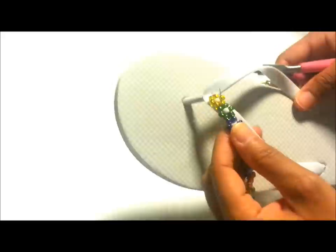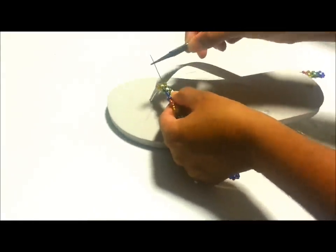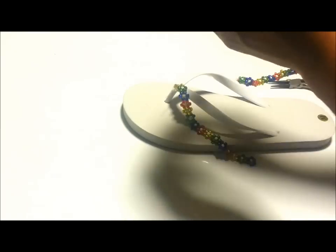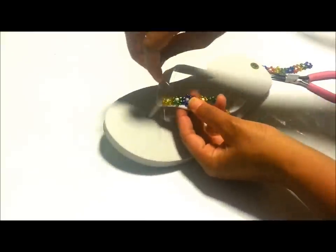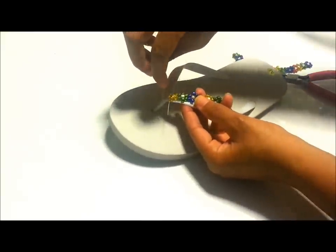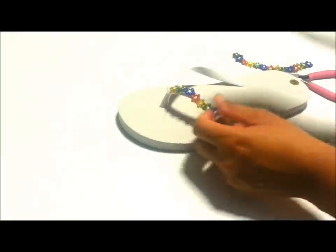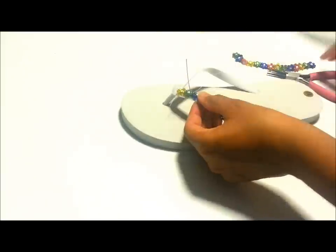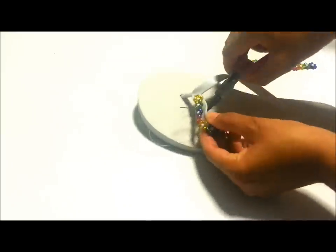So pull your needle up and then you're going to go through that white bead, that second white bead or whatever color your center bead is. So I'm just going through it and then right below that white bead, that's where I'm putting the needle down. So the needle is actually going through the strap between that green and purple or blue color beads.